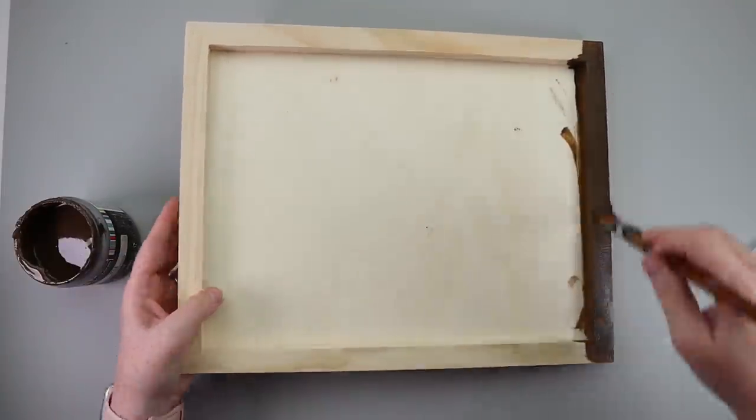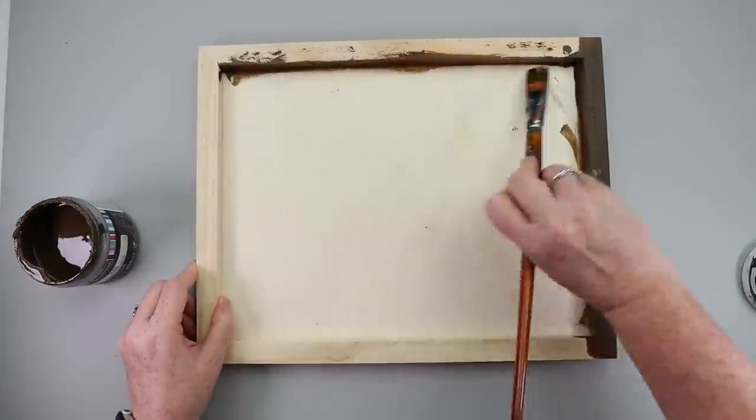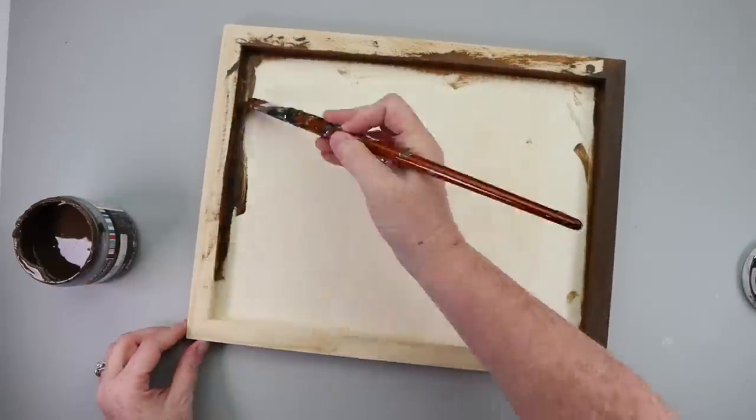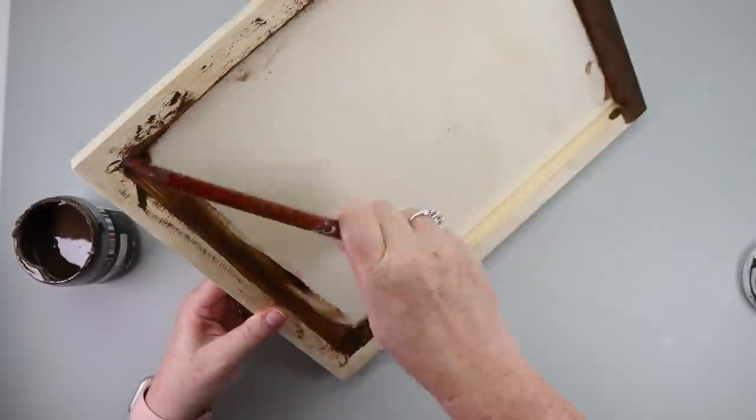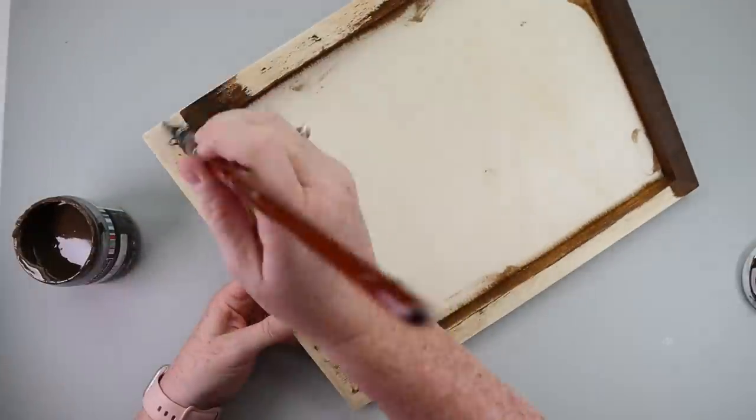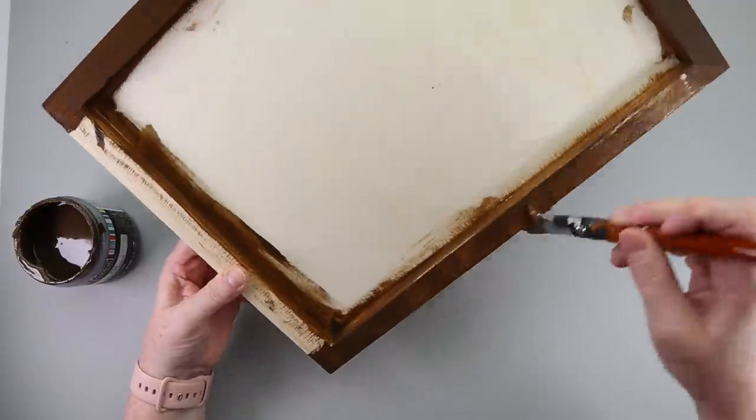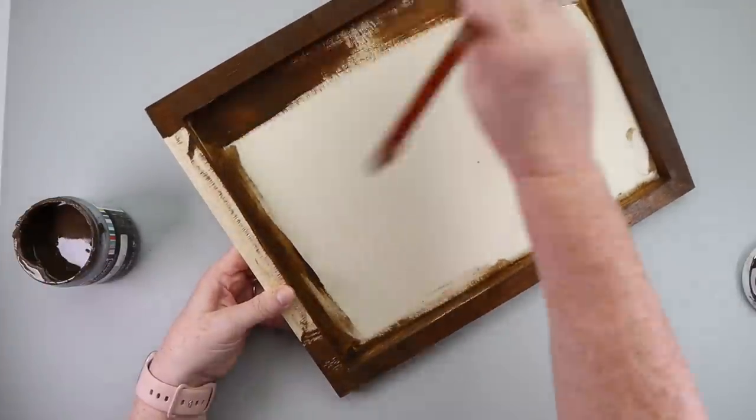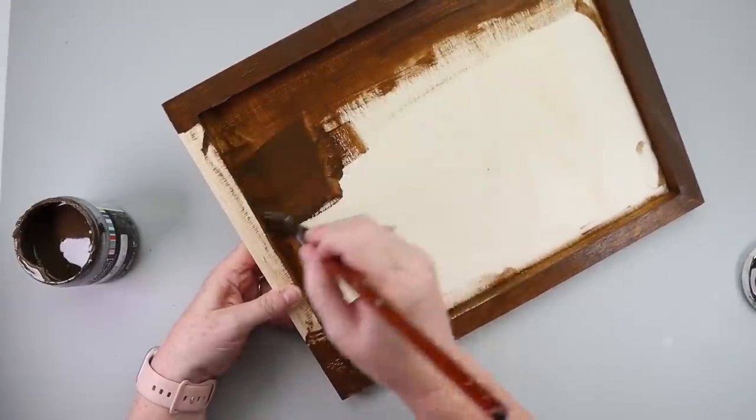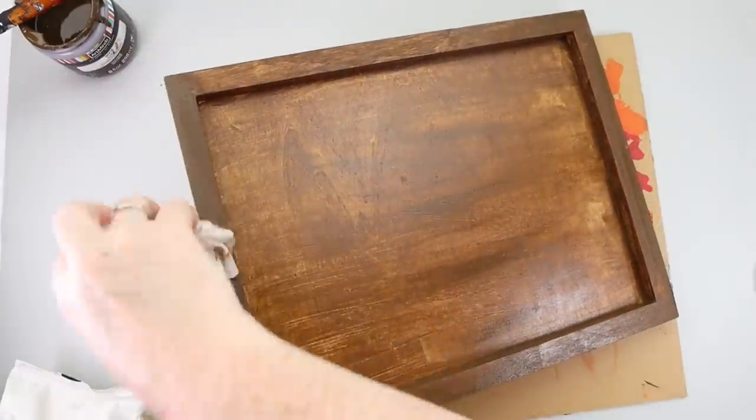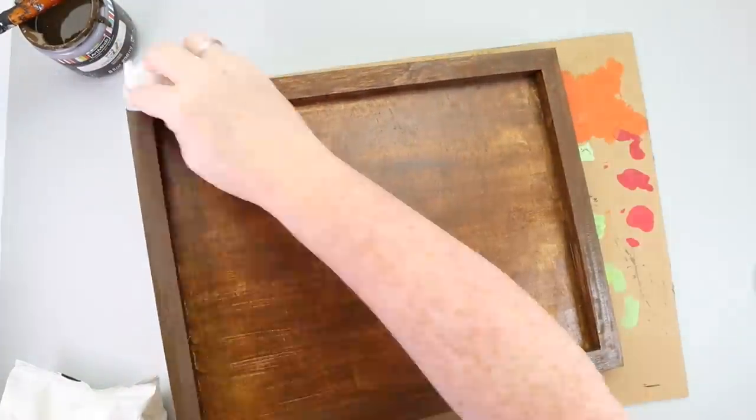I decided to use brown wax to stain mine because I felt like that would be a good staple. Another good option would be just to paint the entire thing white. You could do colors if you wanted to. So many different options but I'm going to show you how you can make it stretch even further. So I used the brown wax and I let it dry a little bit and then I took a baby wipe and just wiped over it to kind of remove a little bit of the stain.